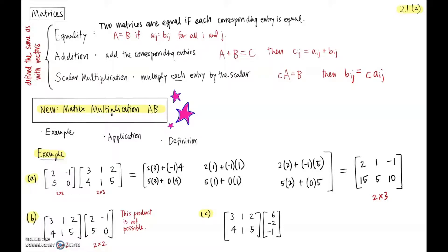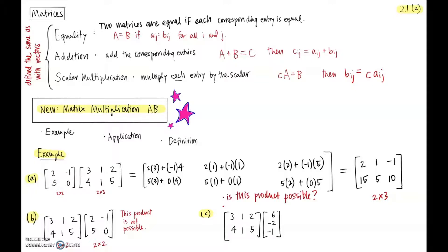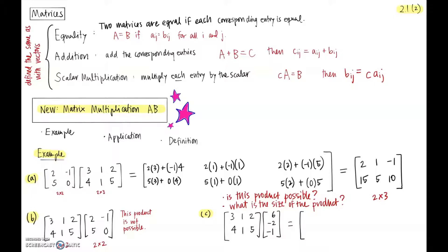Let's try one more example: a matrix multiplied by a column vector. There are two key questions before multiplying: is this product even possible, and if so, what's the size of the resulting product? Let's forge ahead. From the first example, we know that if we take a row and a column, multiply corresponding elements and add them, we get a new element. So let's try: this row times this column.